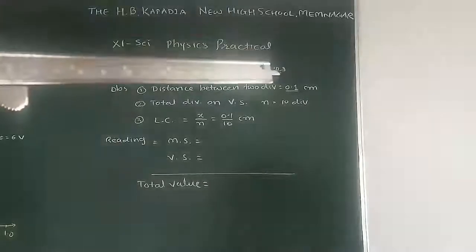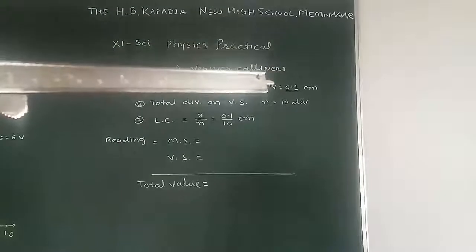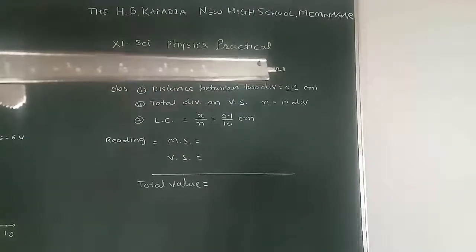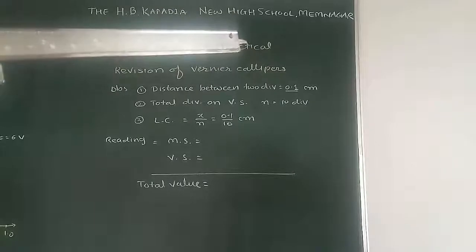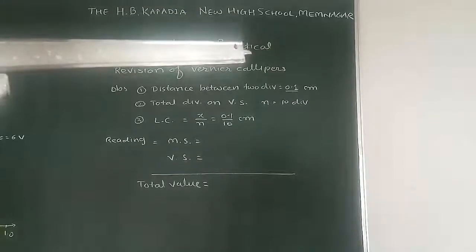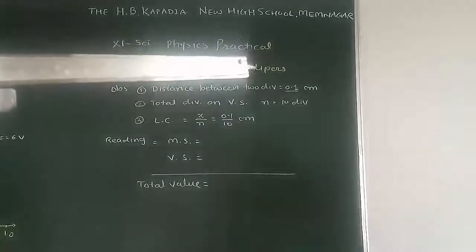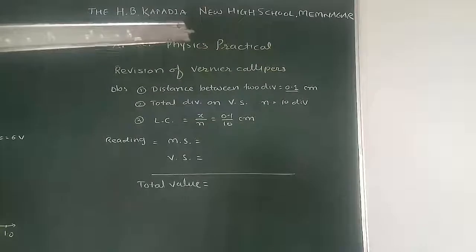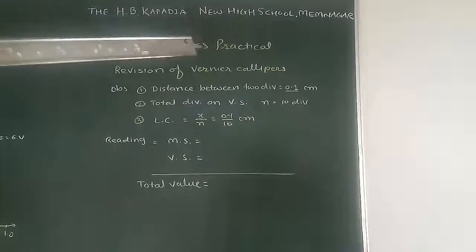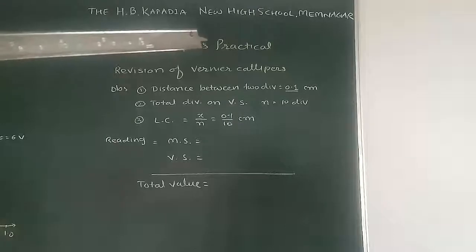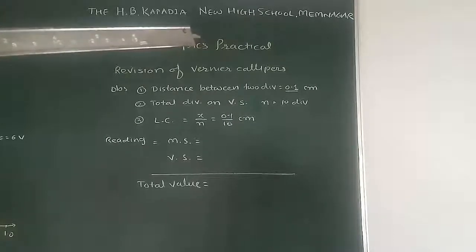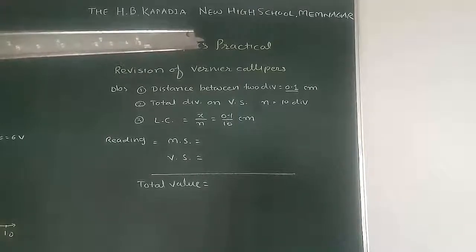Now the least count is equal to LC. Least count is equal to X by N, where X is the distance between two divisions — it is 0.1 centimeter — and N is equal to the total number of divisions, that is 10. So it is 0.1 divided by 10, so least count is equal to 0.01 centimeter.